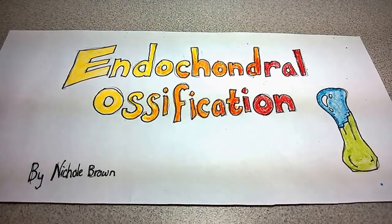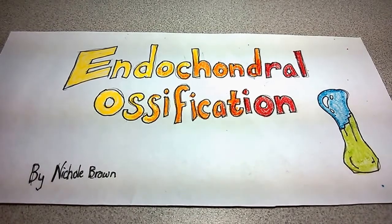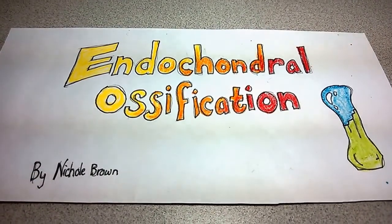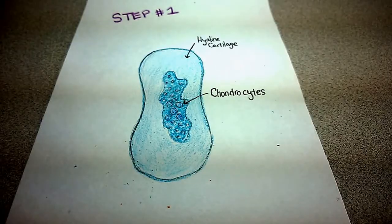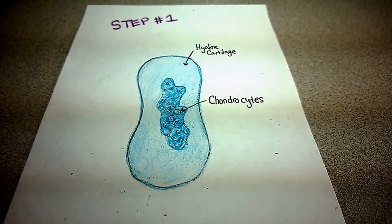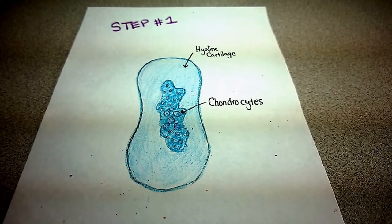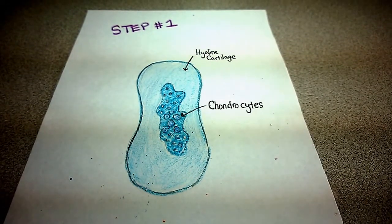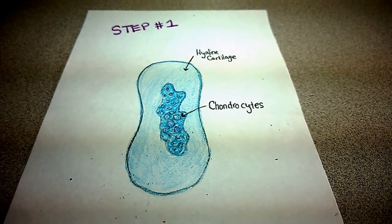Step one: In the beginning, chondrocytes, that is cartilage cells, enlarge. They act as a mold for struts that begin to calcify. The enlarged chondrocytes, crushed by their own weight and size, then die, leaving the calcified struts behind.